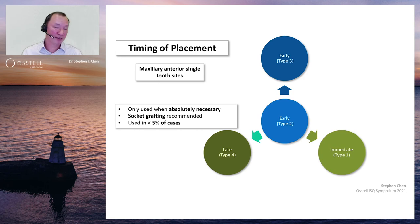If you can't graft at the time of extraction because of infection, then what I would do is take the tooth out, allow resolution of infection, and then graft 6 to 8 weeks later. It's like an early placement, but an early grafting protocol to reconstruct the ridge and then allow 3 to 6 months before the implants are placed.